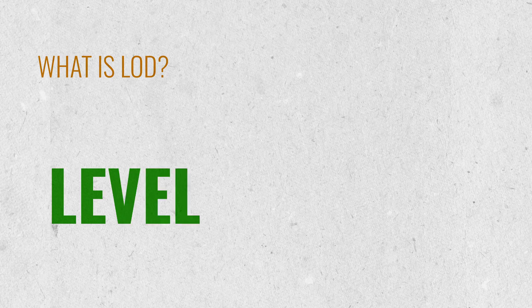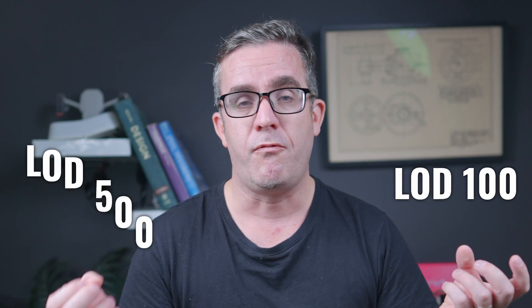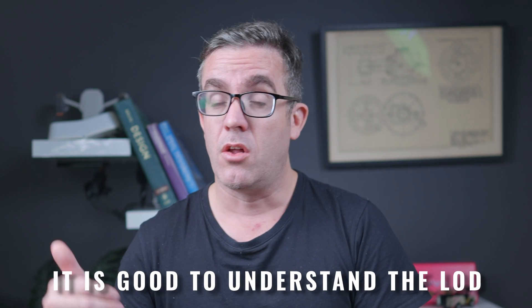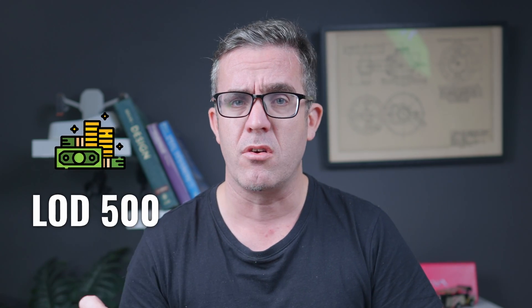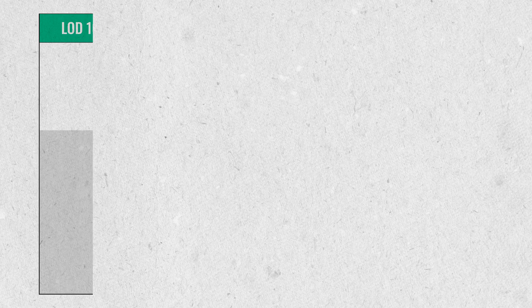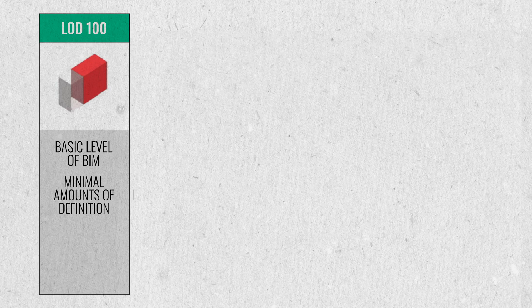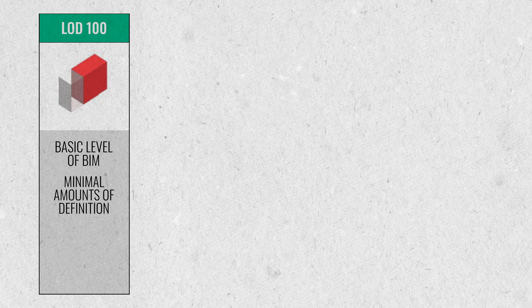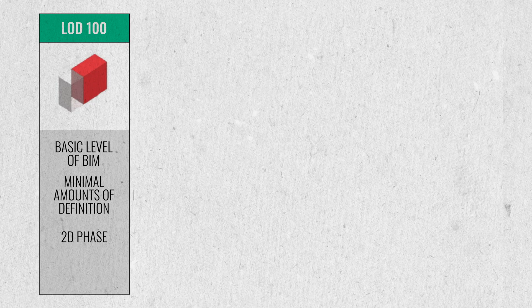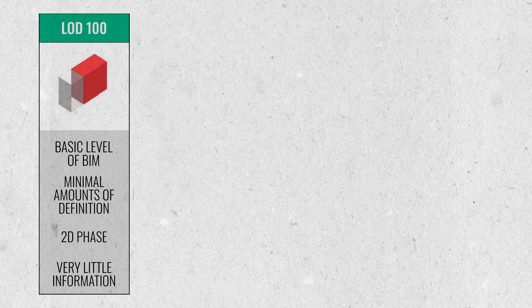LOD — Level of Detail — is a more refined way to break down these specific cases. It ranges from 100 to 500. Most people don't go all the way to 500, but it's good to understand the levels. LOD 100 is very much like your basic level of BIM — you probably have some dimension details but just minimal amounts of definitions on that model, typically in the 2D phase with just plans, dimensions, and elevations. There's very little information in an LOD 100 model, and in cheaper projects you potentially don't need to go any further.